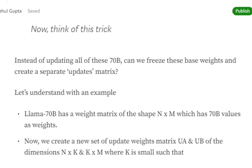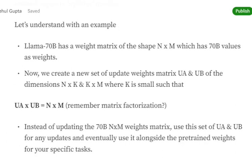Let's understand the whole idea. Assume that Llama 70B has a weight matrix of shape N×M. We create a new set of update weight matrices UA and UB (where U stands for update) with dimensions N×K and K×M, where K is very small.